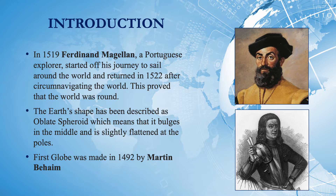As new discoveries were made, people came to realize that the Earth was not flat but round. Today, we are able to see satellite images of the Earth from space depicting its shape and size. The Earth's shape has been described as an oblate spheroid, which means that it bulges in the middle and is slightly flattened at the poles. The first globe was made in 1492 by Martin Behaim.